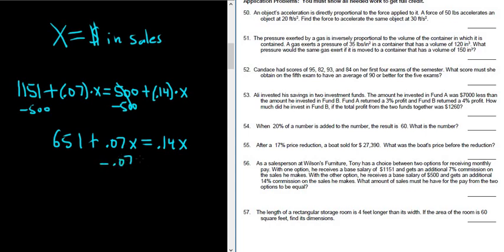Then you do minus 0.07X, minus 0.07, just to get the X by itself, that's the goal. So we get 651 equals, and this is going to be 0.07X.